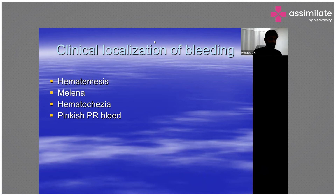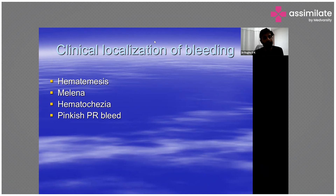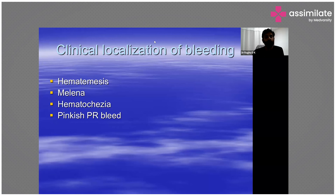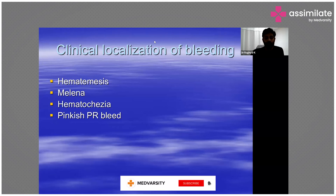Sometimes right-sided colonic bleeding can also present with melena. Hematochezia — fresh blood in the stool — most commonly comes from lower gastrointestinal bleeding, but it can also occur with rapid transit or massive upper GI bleeding from varices or a bleeding duodenal or gastric ulcer.